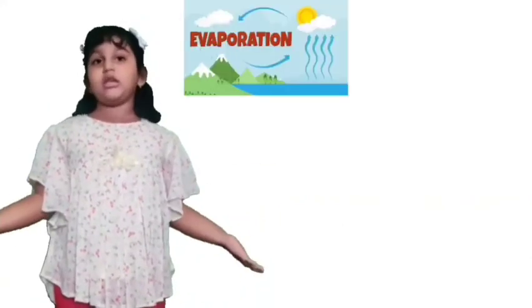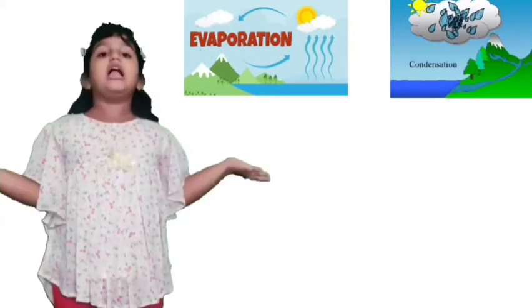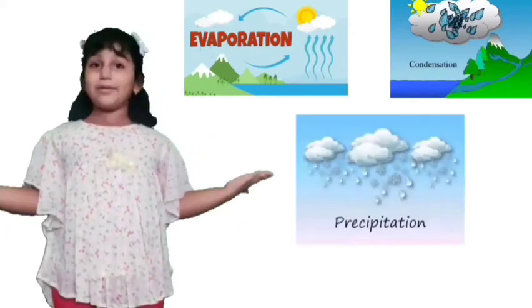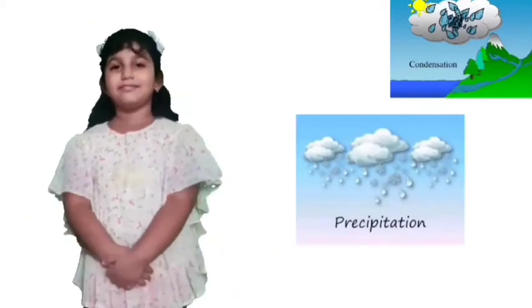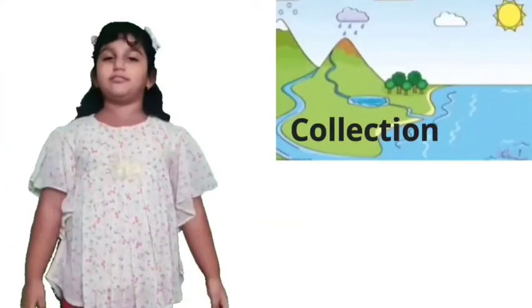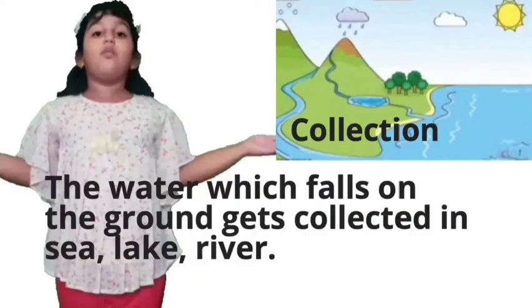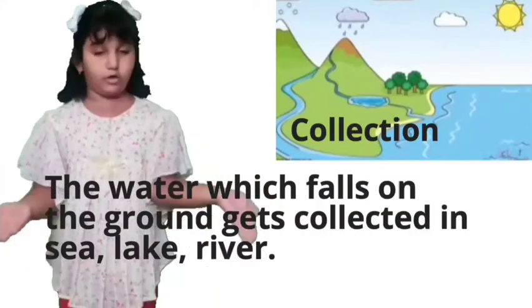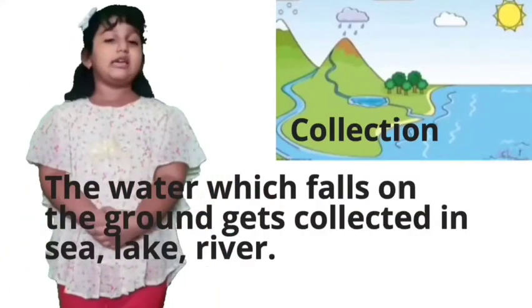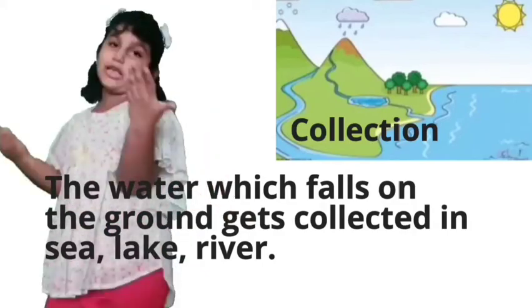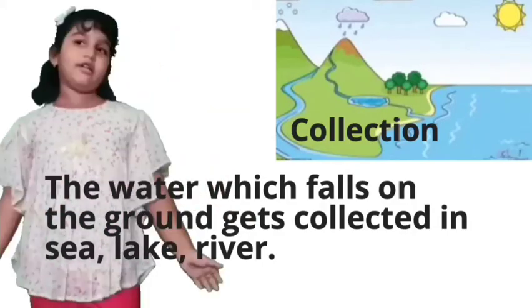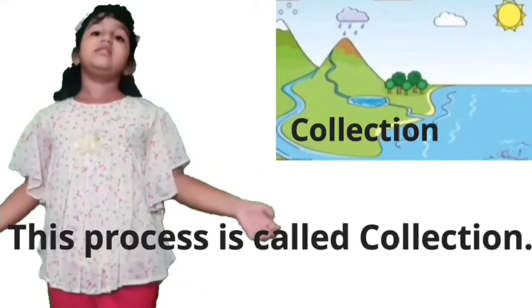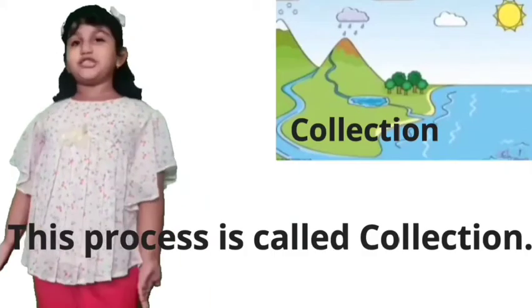We have seen evaporation, condensation and precipitation. Now the last one is collection. The water which falls on the ground gets collected in sea, lake and river. This process is called collection.